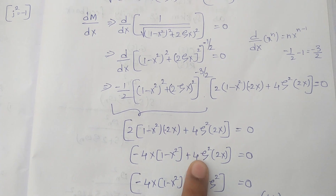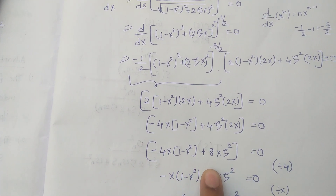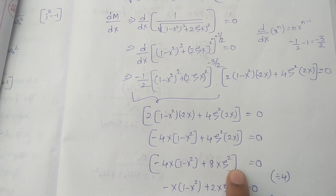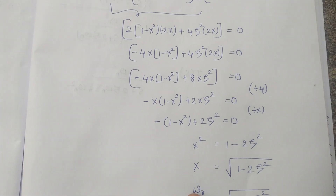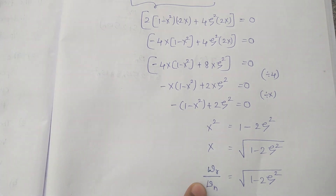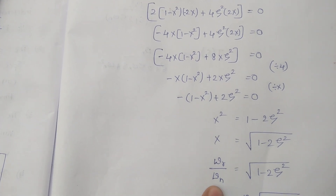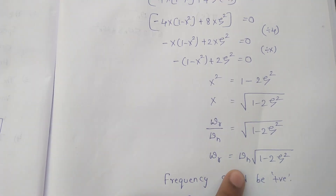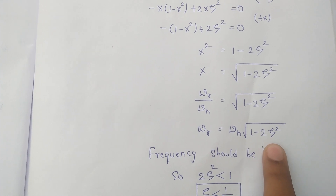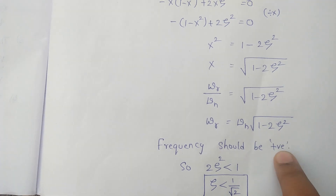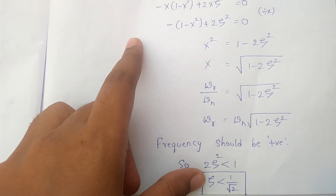Simplifying: −4h(1 − h²) + 8hζ² = 0. Dividing both sides by 4 and then by h: h² = 1 − 2ζ². Therefore h = √(1 − 2ζ²). Since h = ω/ωn, the resonant frequency is ωr = ωn · √(1 − 2ζ²). For resonant frequency to exist, 2ζ² must be less than 1, meaning ζ must always be less than 1/√2.